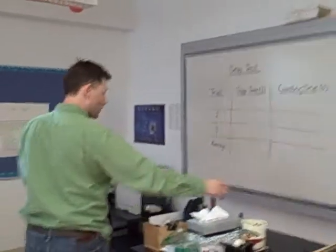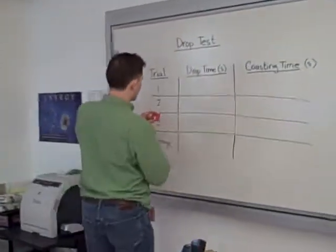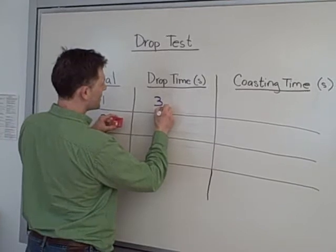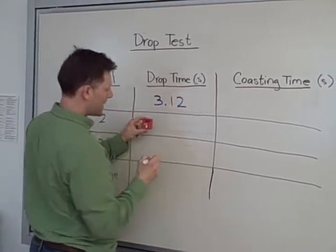So I remembered, or I had one of my teammates write down what the number was. And I remembered that it was 3.12 seconds to fall down.